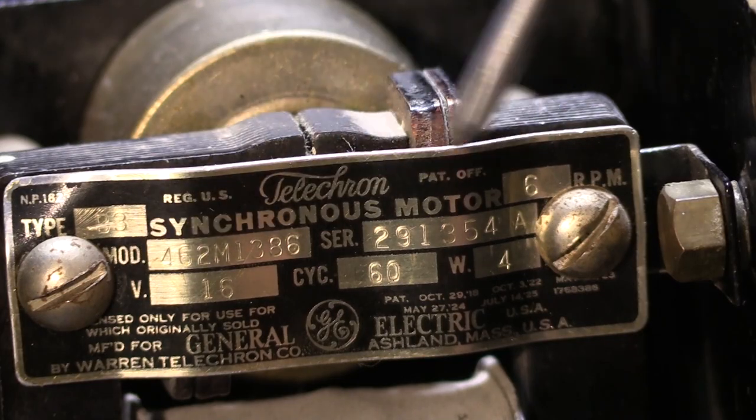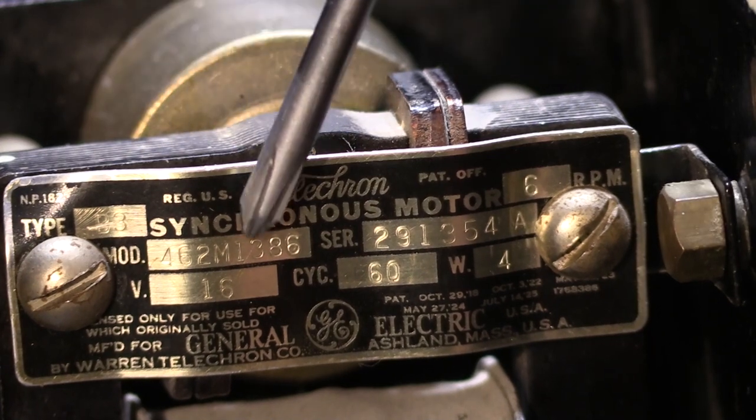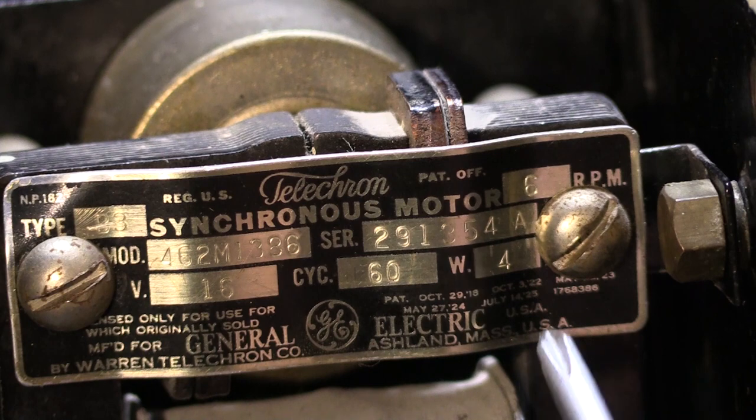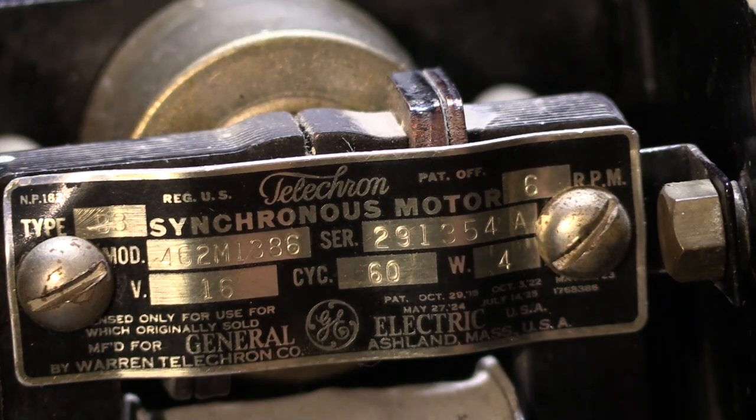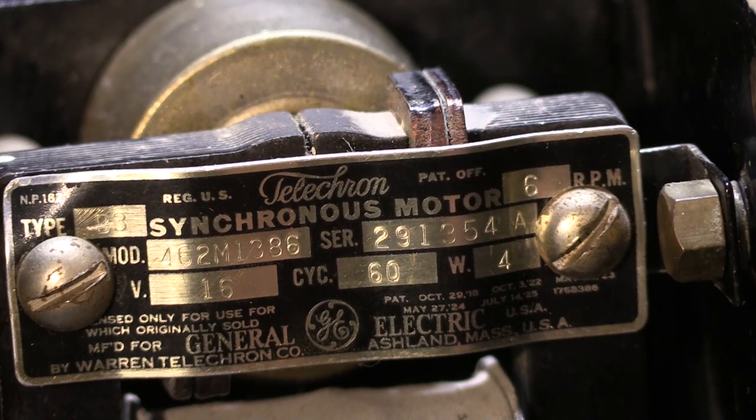Here's a close-up of the data plate on the Telechron motor assembly. It's got the type, the model number, a serial number, 16 volts, 60 cycle, runs at 4 watts, and the RPMs are up here in the corner. This is partially covered up by the big screws to hold the motor assembly together.